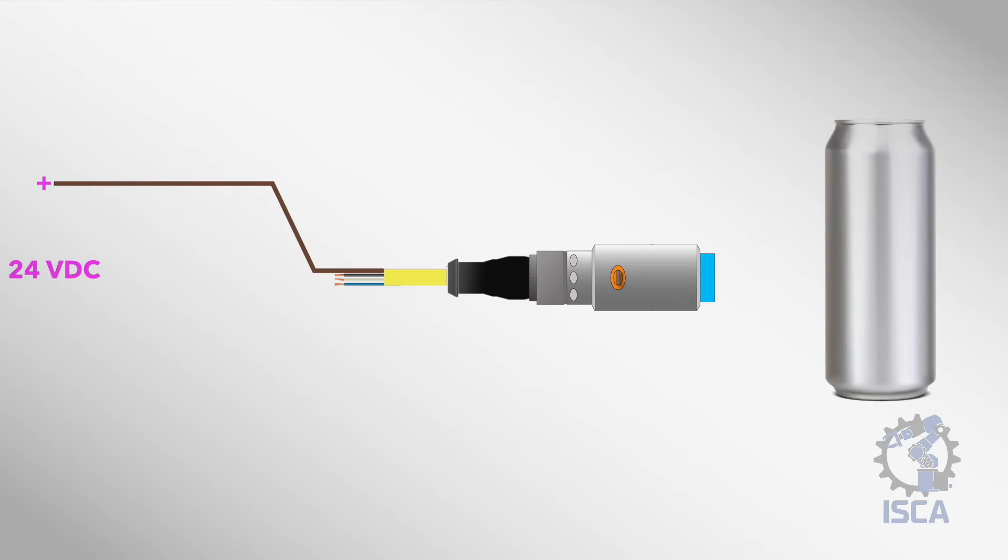The brown wire connects to 24 voltage DC positive, while the blue wire connects to 24 voltage DC negative to provide power. The black and white wires carry the sensor output signals.